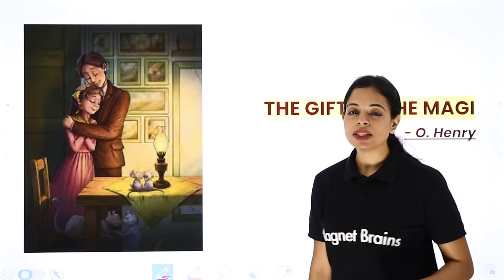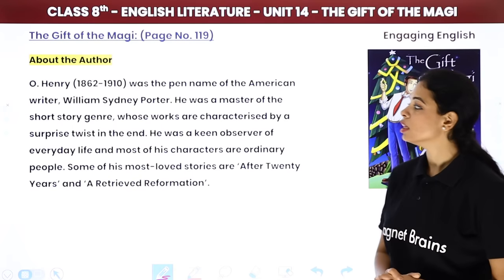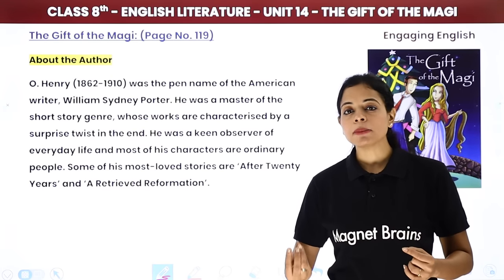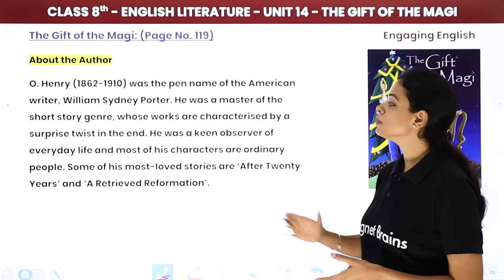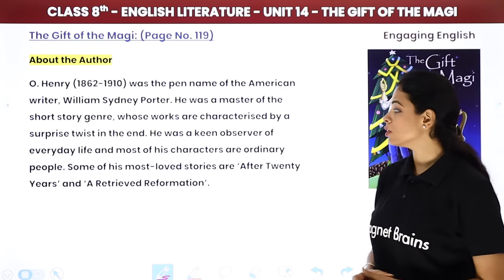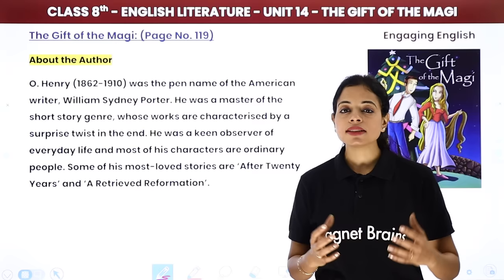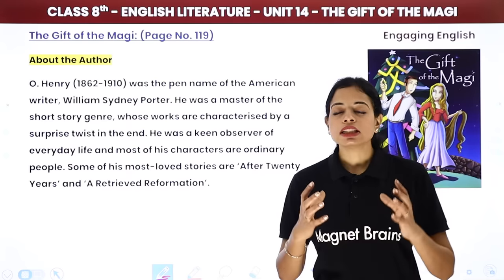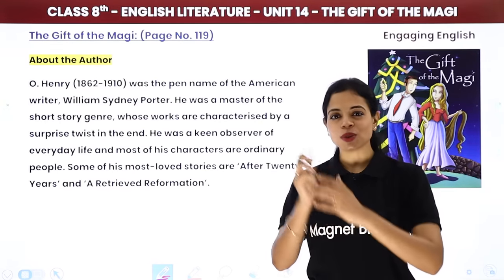We are going to start this chapter by reading something about our author. O. Henry was the pen name of the American writer William Sidney Porter. Pen name ka matlab hota hai - when you do not want to give your real name, you use an imaginary name in your books. He was a master of the short story genre, whose works are characterized by a super twist in the end. Woh hamesha aisi stories likhte the jisme last mein twist hota tha - a thrilling turn at the end, which was very exciting.